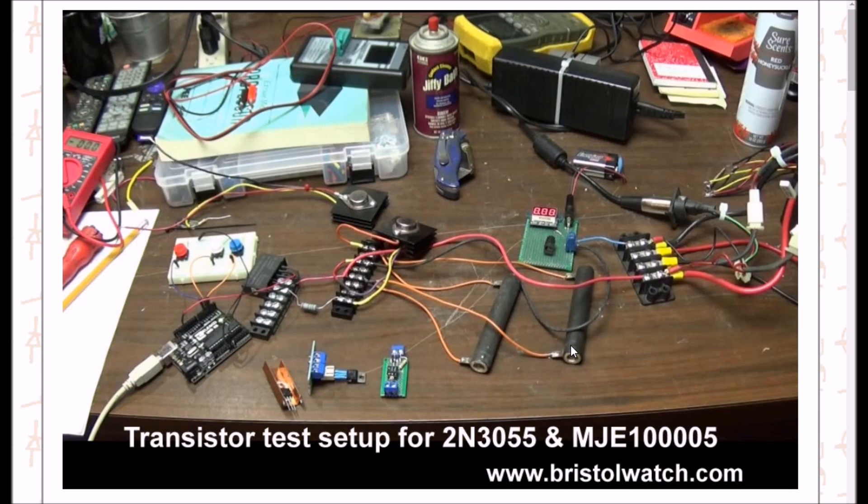The transistors that I'll have under test: this one's an MJE10005 and that one over there is a 2N3055. I'm going to be switching them on using this little black module there. It's a solid state relay, or you can make your own as I'll show you briefly.